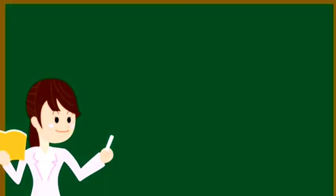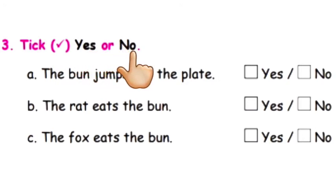Next heading is? Tick yes or no. Children, each question, two options are given. Yes or no. We have to select the correct one. Okay children?